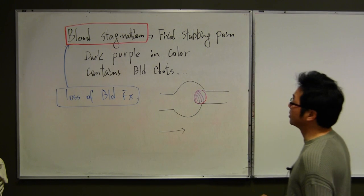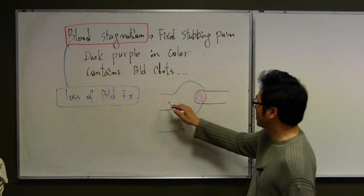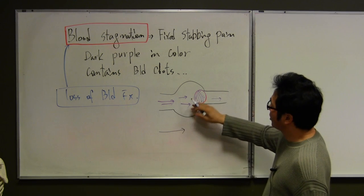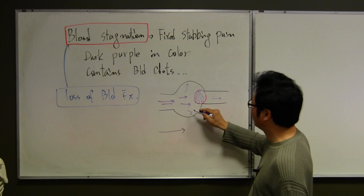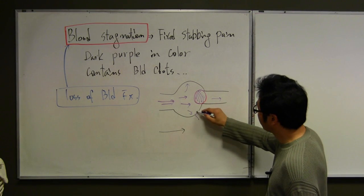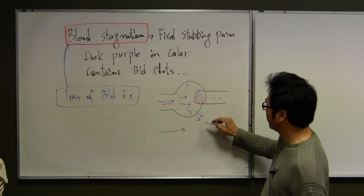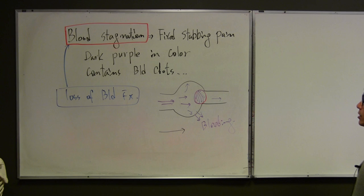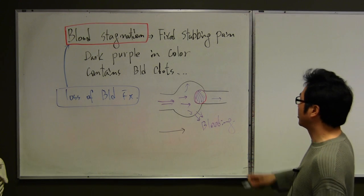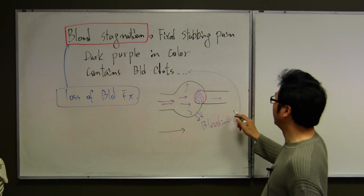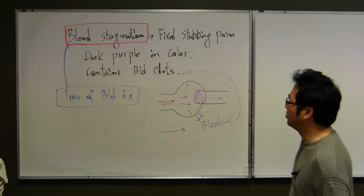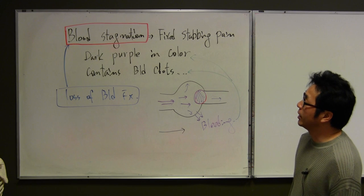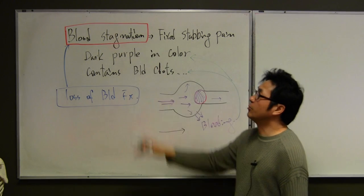This is a blood stasis. If blood stasis, the blood flow to this direction, there might be increase of the blood pressure in this area. And finally, it causes extravasation. This is a bleeding. This type of bleeding usually contains lots of the clots. And color of the blood will be dark or purple. So dark purple color, or the blood clot contained, those are another sign with the blood stagnation.